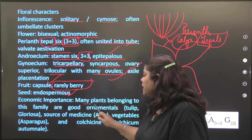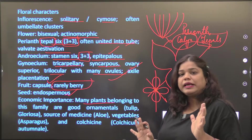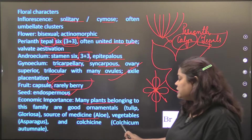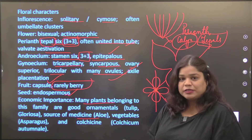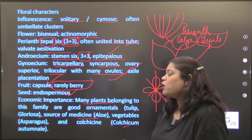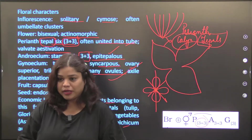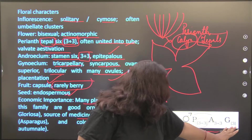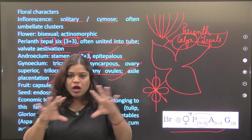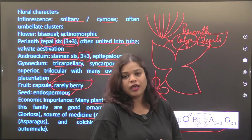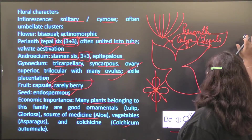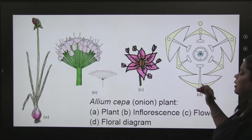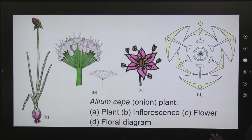Economic importance: many plants of this family are good ornamentals — very beautiful to see. Tulip, Gloriosa are sources of medicine. Asparagus is a vegetable. Colchicum autumnale is also economically important. These are the characteristics of the Liliaceae family — some specific characters, general description, and the floral formula. To see it more clearly, we can look at the diagram.